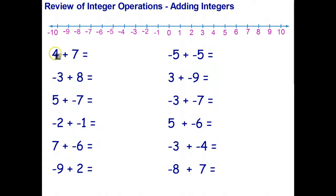The first question: I've got four dollars in one pocket and seven dollars in another pocket — altogether I have eleven dollars. So four plus seven is eleven, or you could say positive four plus positive seven is positive eleven. In the next question I've got a bill for three dollars in one pocket and eight dollars in the other pocket.